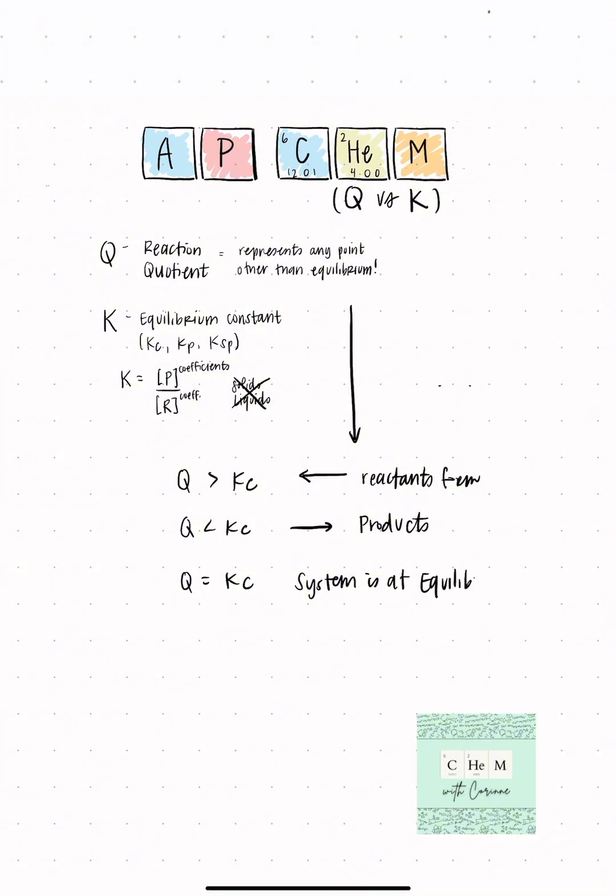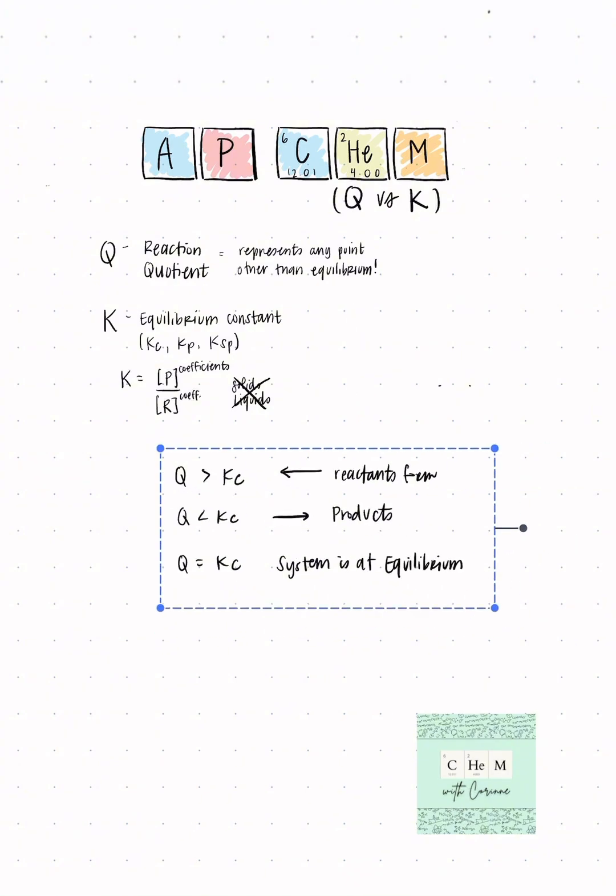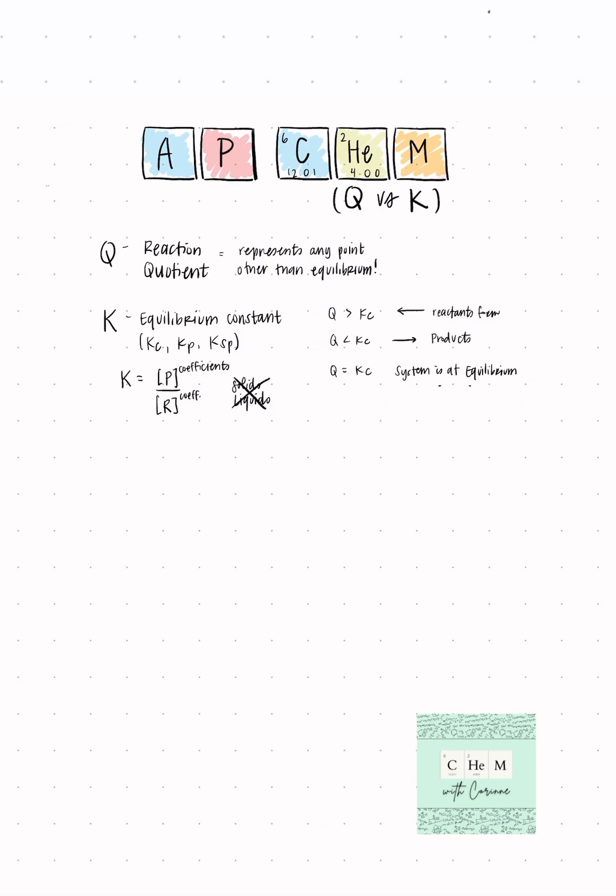If Q is less than K, then we're going to favor the forward reaction and we're forming more product. And if Q is equal to K, well, that means our system is at equilibrium.